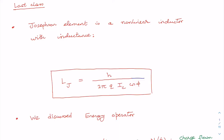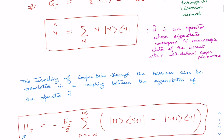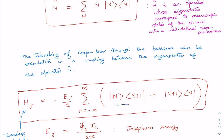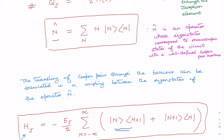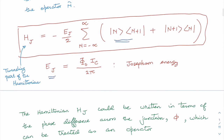In the last class, we continued our discussion on the Josephson element, where we learned that it is a nonlinear inductor with inductance given by a specific expression. Here H is Planck's constant, IC is the critical current, and cos(φ) is the term where φ is the phase difference across the junction. We then discussed the energy operator expressed in terms of the number state or Fock state basis, where operator N-cap has eigenstates corresponding to macroscopic states with well-defined Cooper pair numbers. EJ is the Josephson energy.